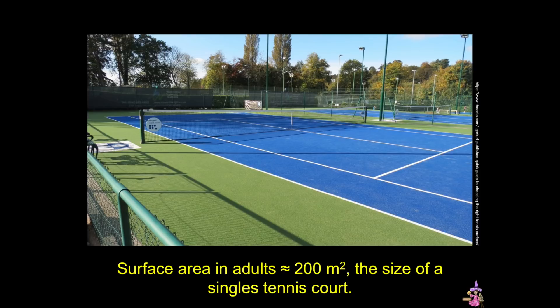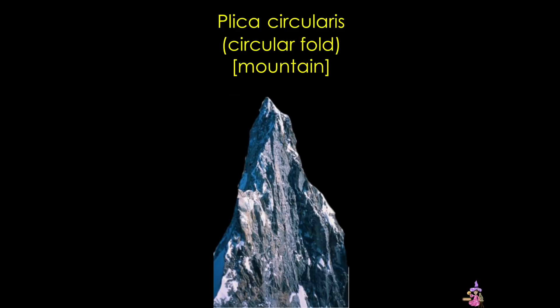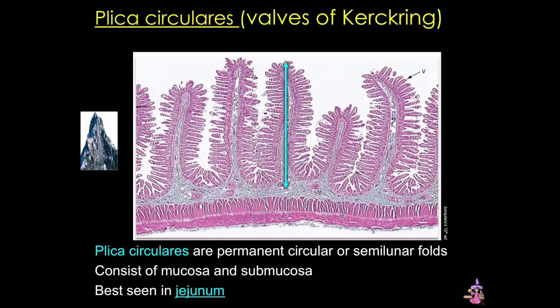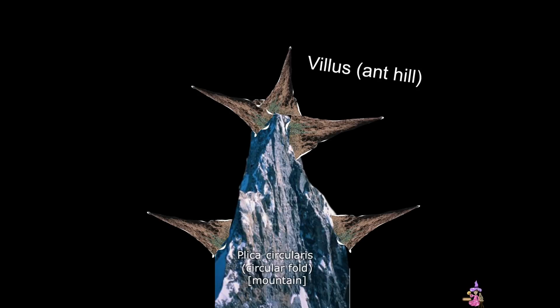Here's one way to visualize these specializations. First, we have the plica circularis — actual folds in the submucosa and mucosa. I like to think of them as mountains. Here's an H&E stained section through the jejunum, the middle portion of the small intestine. These plica circularis are permanent folds of mucosa and submucosa. Unlike the rugae in the stomach, these don't distend with digestion and can't be flattened. They appear in the duodenum but are most prominent in the jejunum. You can also see finger-like projections off the mucosa — these are the villi, which cover the entire surface of the small intestine. I think of them as anthills jutting off those mountains.